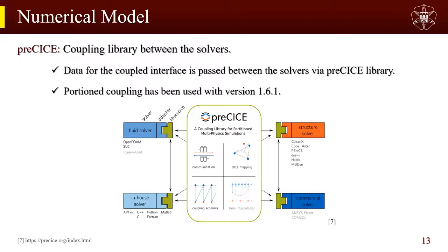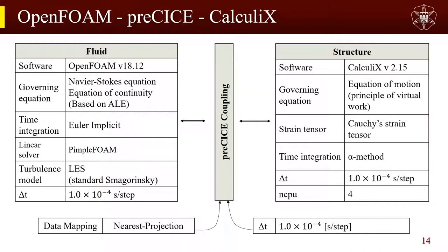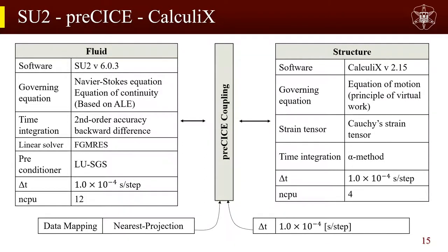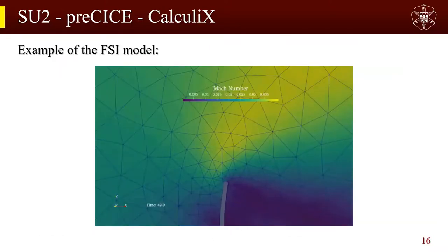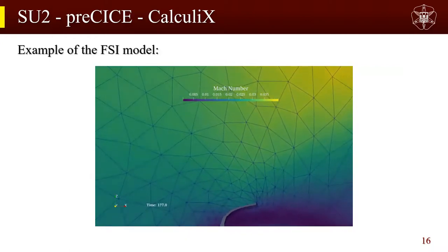preCICE is the coupling library between solvers. Data at the coupled interface is passed between the solvers by the preCICE library. The numerical setup for the OpenFOAM–preCICE–CalculiX model uses Euler implicit time integration with the standard Smagorinsky model. For the SU2–preCICE–CalculiX model, second-order accuracy backward difference time integration is used with the linear solver FGMRES. The analysis models have been verified using FSI benchmark cases.